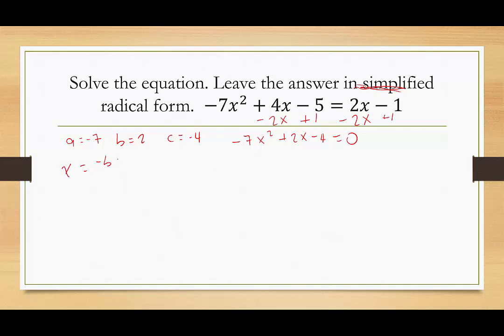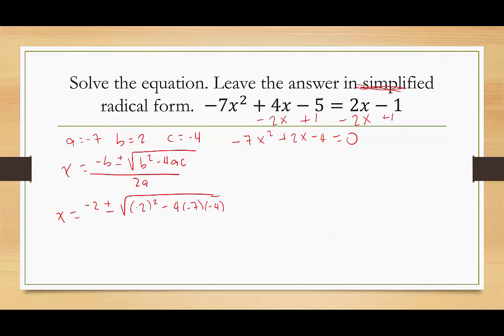Plugging in: x is equal to negative b plus or minus the square root of b squared minus 4 times a times c, all over 2a. So negative of 2 is negative 2, plus or minus the square root of 2 squared minus 4 times negative 7 times negative 4, all divided by 2 times negative 7. Cleaning up the discriminant — that's what's under the radical — 2 squared is 4. Here I have 3 negatives, so this is going to end up being a minus. 4 times 4 is 16, and 16 times 7 is 112, over negative 14.